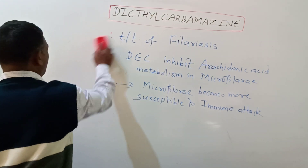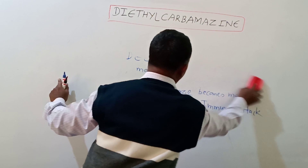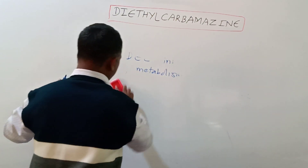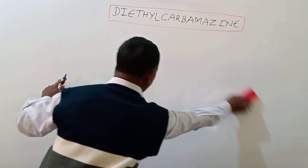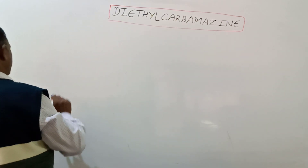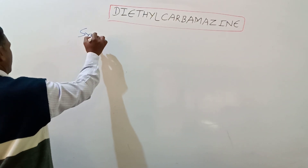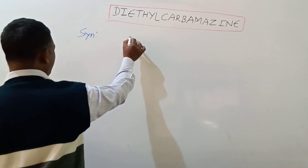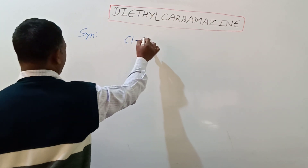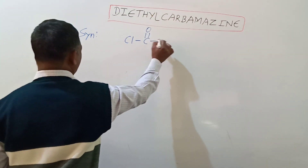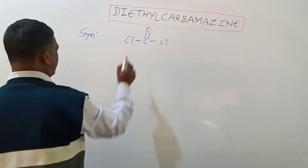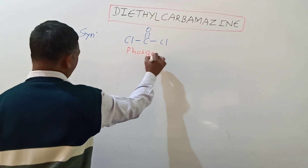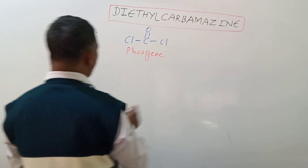Let's look at the synthesis of this compound. A very simple and efficient synthetic scheme is there. In the synthesis, the starting material is phosgene, which reacts with diethylamine.